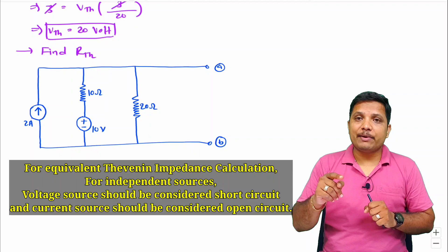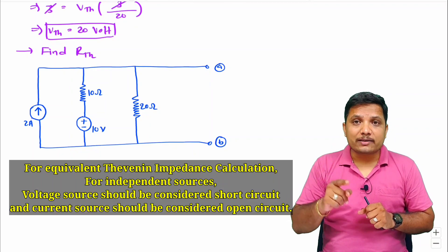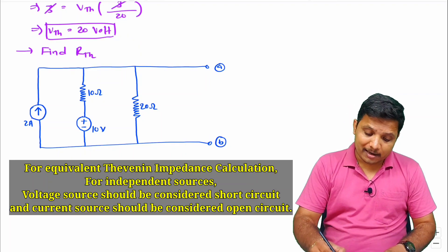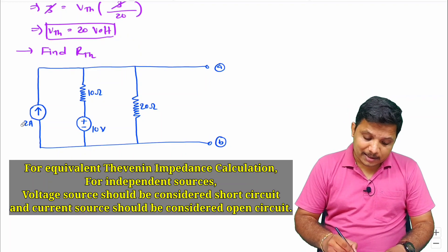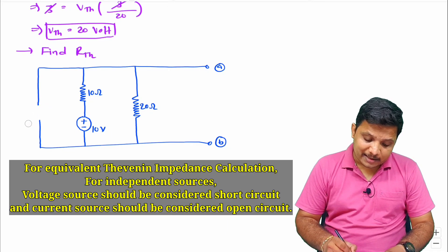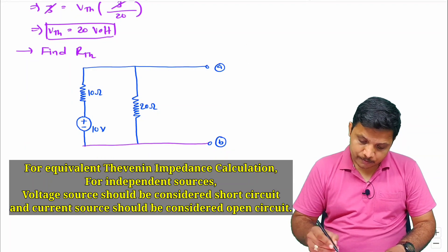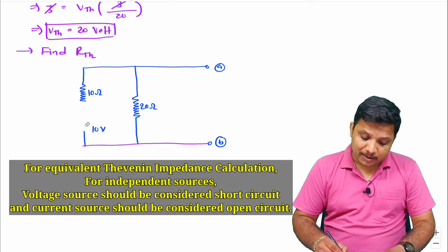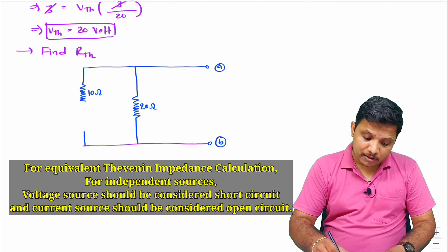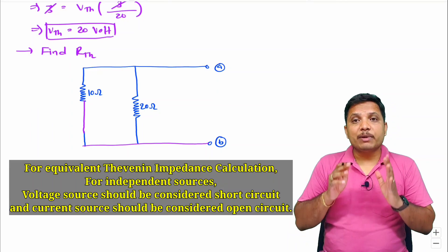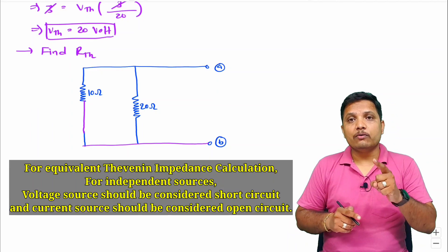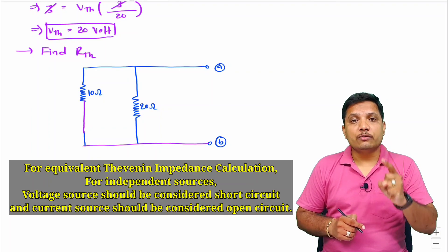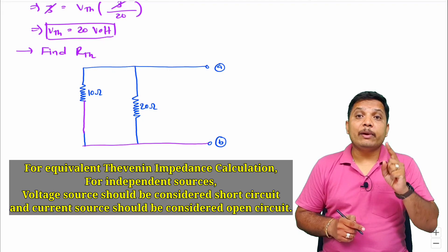So for independent source, we should be having voltage source as short circuit and current source as open circuit. So here I need to replace this current source as open circuit, so I am eliminating this. And voltage source as short circuit, so I need to provide short circuit instead of this voltage source. This is the basic thing which we need to follow - voltage source should be short circuited and current source should be open circuited for independent sources.